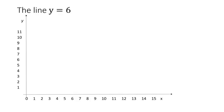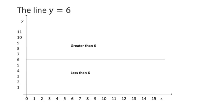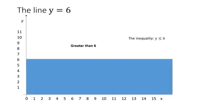Similarly, the line Y equals 6 is a horizontal line that cuts the Y-axis at 6. Above the line the values of Y will be greater than 6. Our inequality from the problem says we need Y less than or equal to 6, and that is the region below the line.